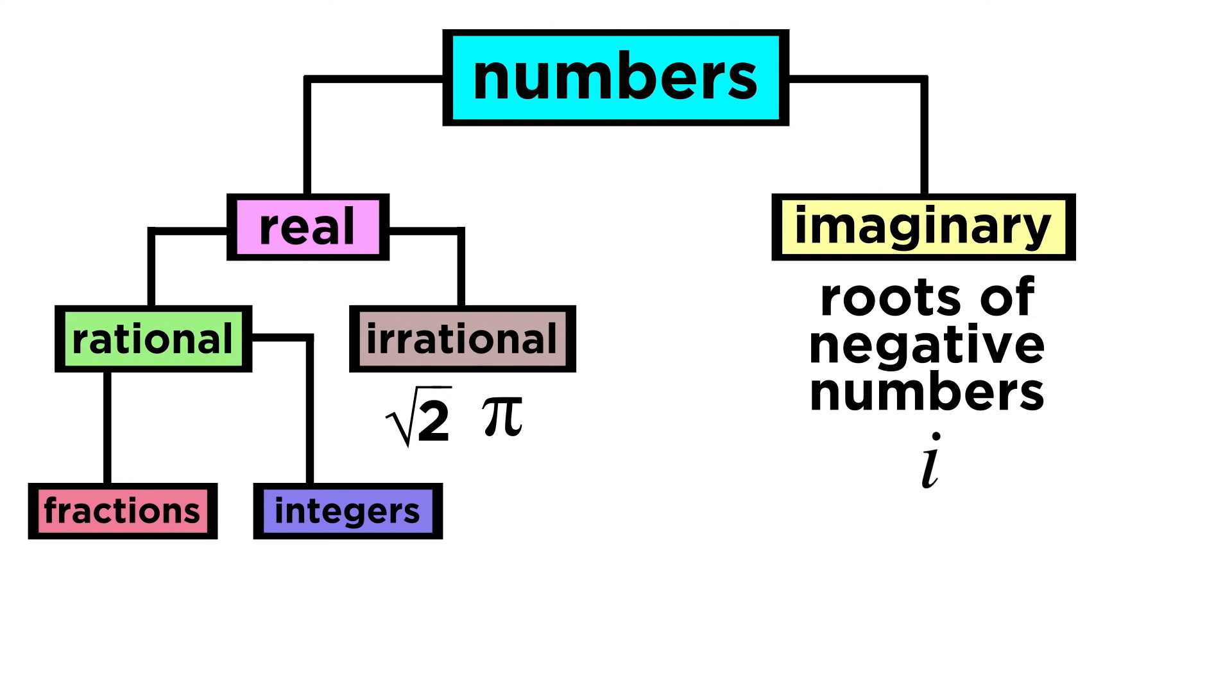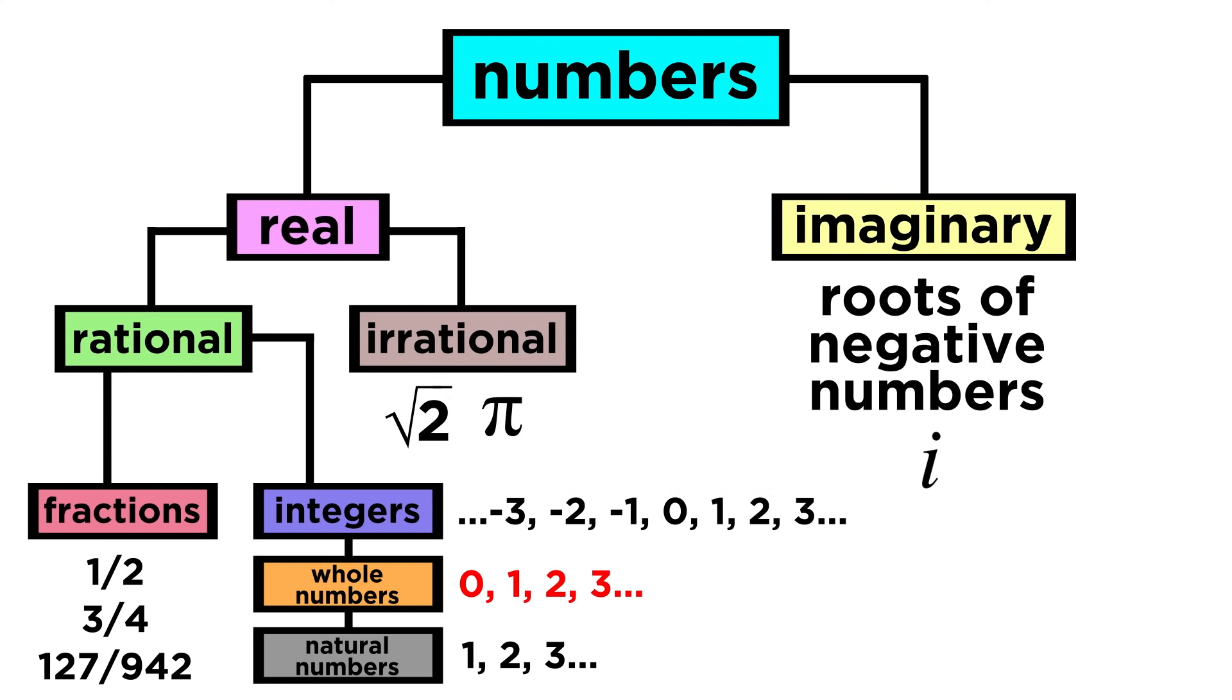If we want to, we can subdivide rational numbers further to describe types of numbers we already know about, like fractions and integers. Fractions are all the numbers that happen in between the integers, and there are infinitely many of them in between each integer. Within integers, we can describe whole numbers, which are all the integers starting from zero and going in the positive direction, and natural numbers, which are all the integers starting from one, so the same as whole numbers, just without the zero.